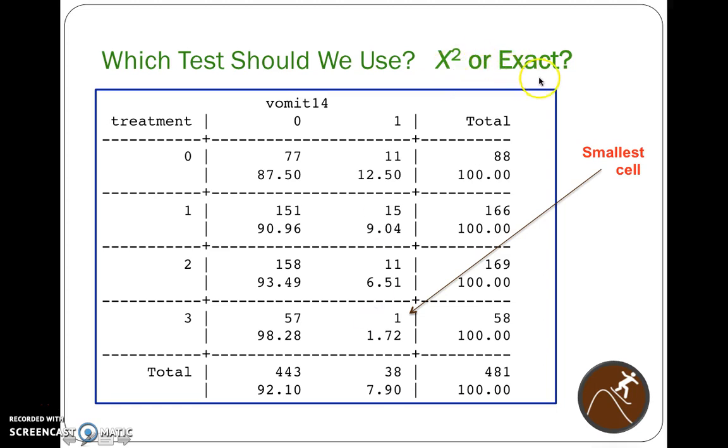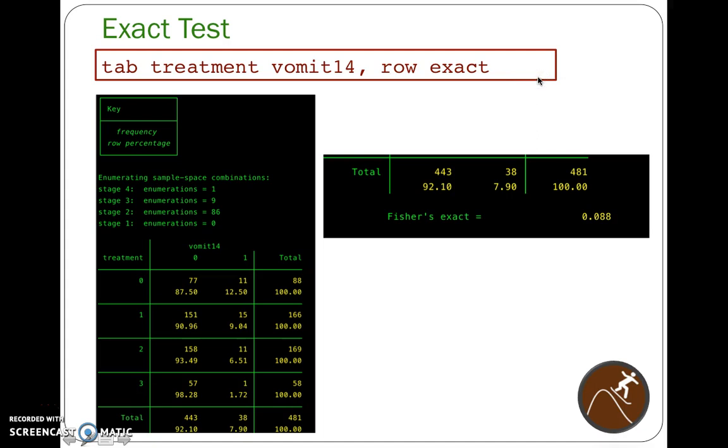So instead of typing in chi-2, like we had done previously, we can just type in exact at the end of our command. So tab, treatment, vomit14, comma. We don't need to have the row in there, but we can if we want. So comma, row, and then exact. And when we do that, it will give us all kinds of output that will eventually end like this. So we'll get all of our table information and all of our row information, and then we'll get this Fisher exact p-value of 0.088.